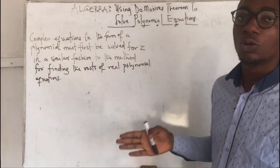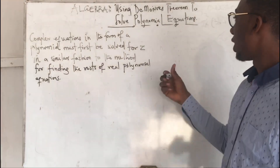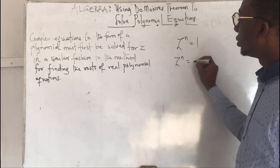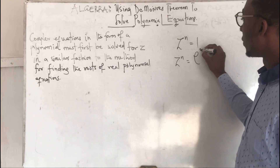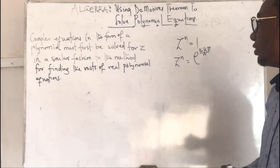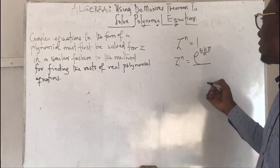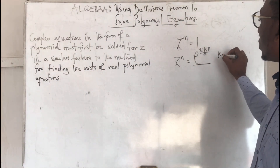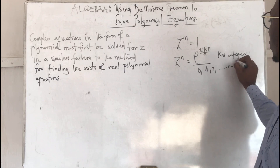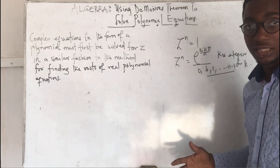You have to look at those concepts before we proceed. We said that if we have z^n = 1, then to find it, we rewrite it as e^(2ikπ/n). That is where we find the nth roots of unity. This becomes our solution, where k is an integer starting from 0, 1, 2, up to n minus 1 for all values of k.